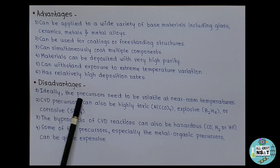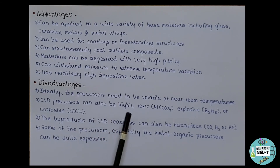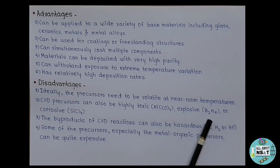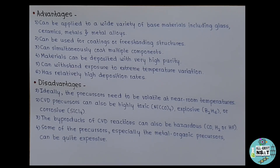CVD also has disadvantages. One primary disadvantage lies in the properties of the precursors — ideally they need to be volatile at near room temperatures. CVD precursors can be highly toxic (e.g., NiCO4), explosive (e.g., B2H6), or corrosive (e.g., SiCl4). The byproducts of CVD reactions can also be hazardous, such as CO, H2, or HF. Some precursors, especially metal-organic precursors, can be quite expensive.